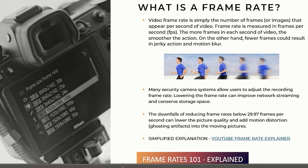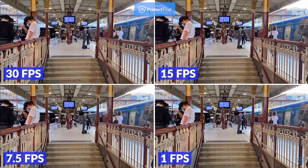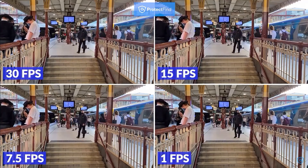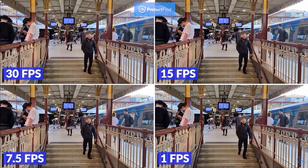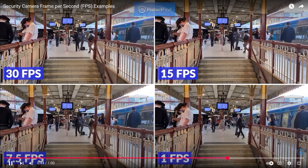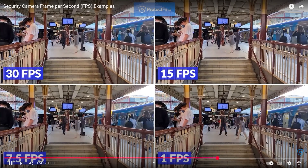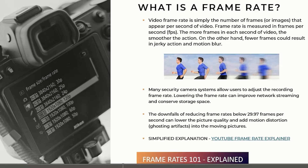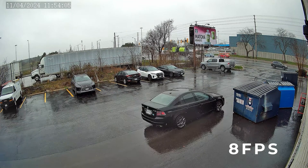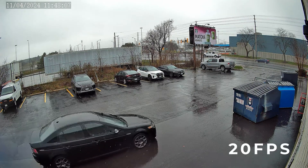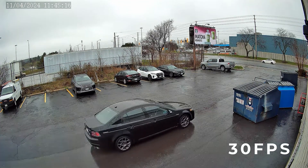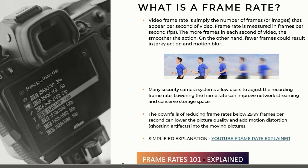Let's talk about frame rates. Frame rate simply put is the number of frames or images that appear per second of a video, and the frame rate is measured by what we call FPS — frames per second. The more frames in each second of a video, the smoother the action. On the other hand, the fewer frames could result in key or motion blur. Many security cameras allow users to adjust the recording frame rate. Lowering the frame rate can improve network streaming and conserve storage space. Conversely, the higher the frame rate, the better the quality, but also the larger the file size.